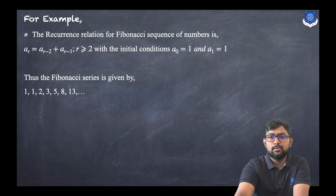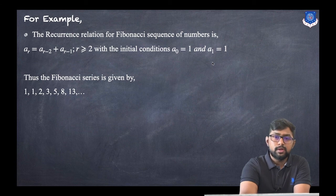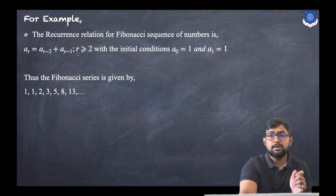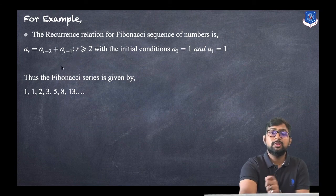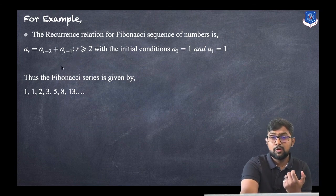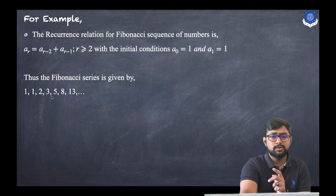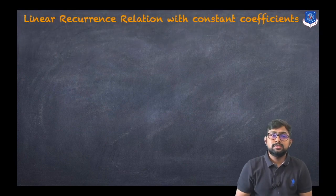The Fibonacci sequence will be: 1, 1, 2, 3, 5, 8, 13, and so on. The initial conditions are a_0 = 1 and a_1 = 1. If we put r = 2, the equation becomes a_0 + a_1 = 1 + 1 = 2. Then 1 + 2 = 3, then 3 + 2 = 5, and so on. This is how you construct a Fibonacci sequence.